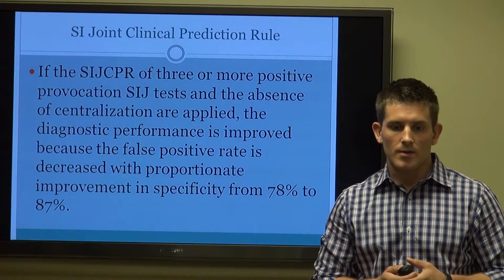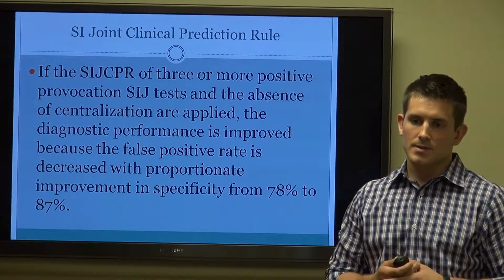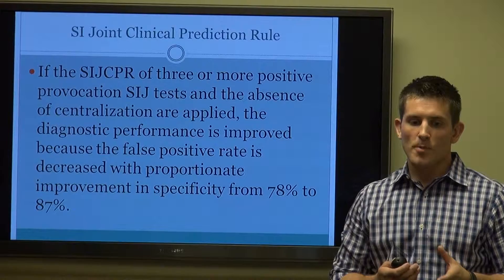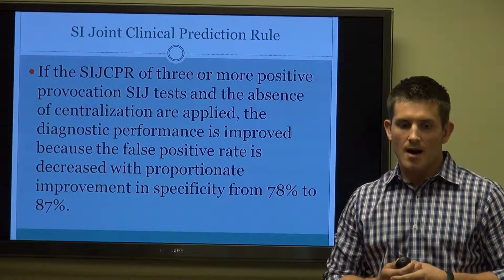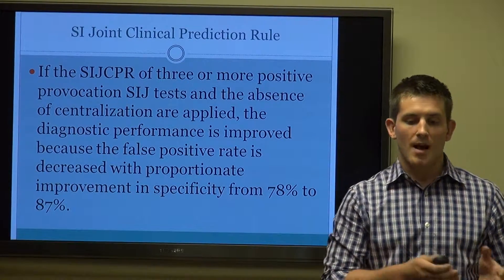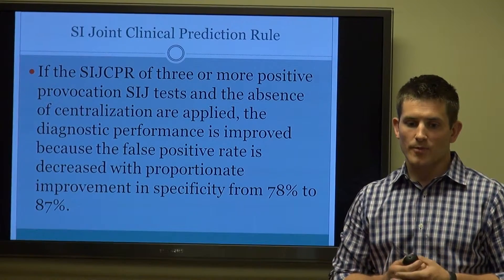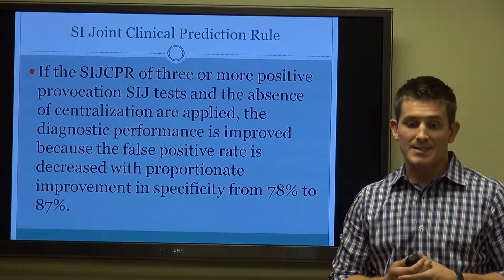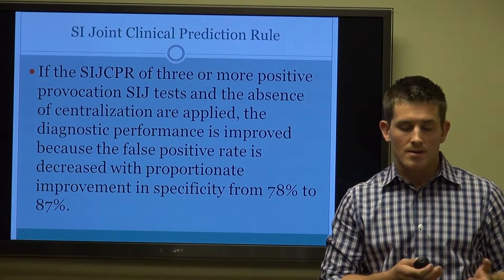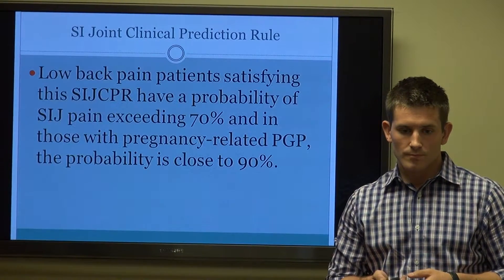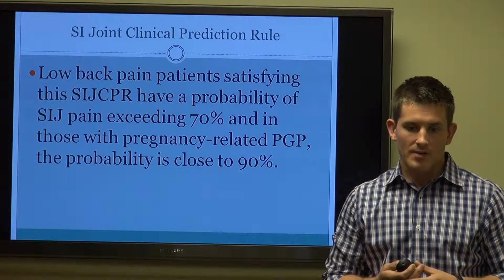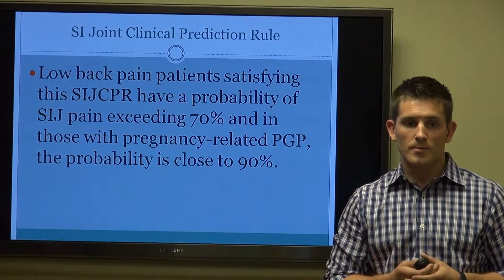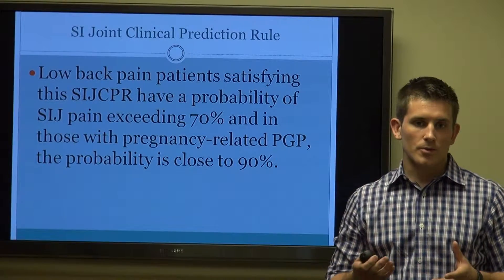The sacroiliac joint clinical prediction rule is a battery of tests developed by Dr. Laslett. He finds that if there are three or more positive provocation tests with the absence of centralization — ruling out the disc — the diagnostic performance is improved. Their statistics show the false positive rate is decreased, with specificity from 78% to 87%. Low back patients satisfying this criteria have a probability exceeding 70%, and applied to pregnancy-related low back pain, it's probably closer to about 90%.